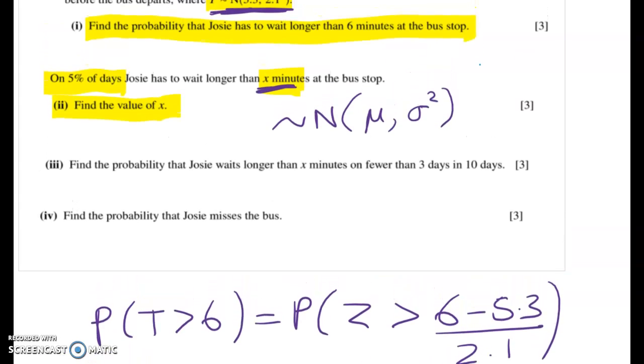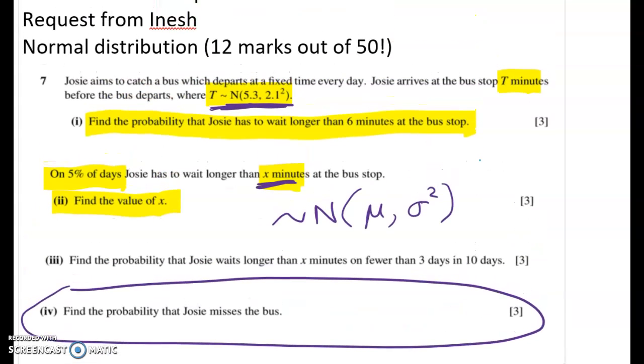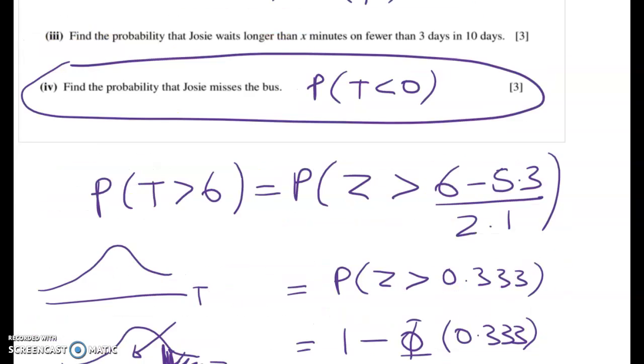Now we've got two more interesting problems. The first one that I'm going to do is actually number four. Find the probability that Josie misses the bus. So we have to use some common sense. When does she miss the bus? Well if she gets to the bus stop when t equals 0 she gets there right when the bus is there. So she's not going to miss it. So what we're looking for here is just to find the probability that t is less than 0. And that's a really easy question. That's exactly what we had in the first part.